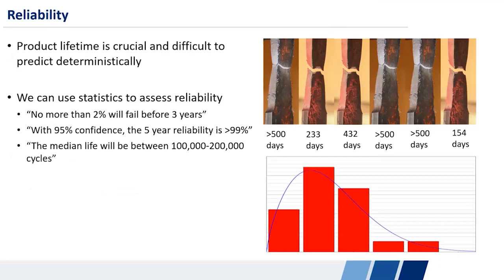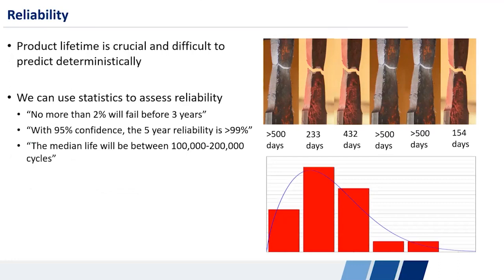So what is reliability? Well, it's essentially product lifetime. We engineer products and we want to know how long they're going to last. And that's really important. That's crucial to things like warranty costs. You might see in the headlines every once in a while some recall due to a reliability issue that cost a company hundreds of millions or billions of dollars. Those pop up all the time. And the additional challenge is that this product lifetime is really difficult, basically impossible to assess deterministically.